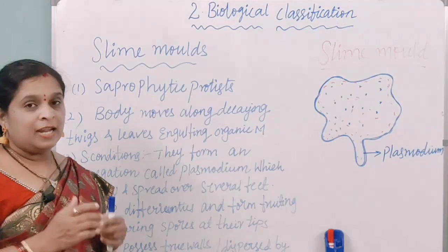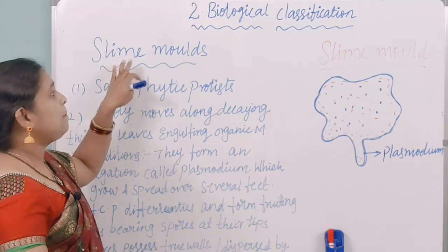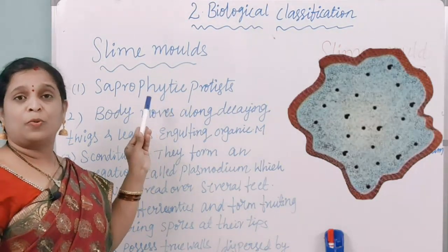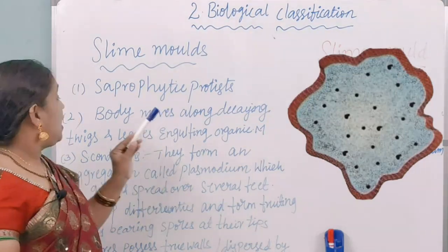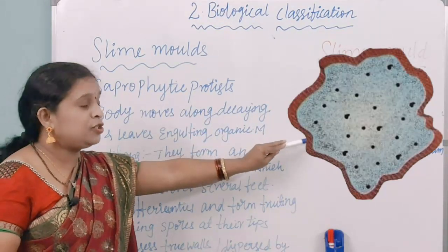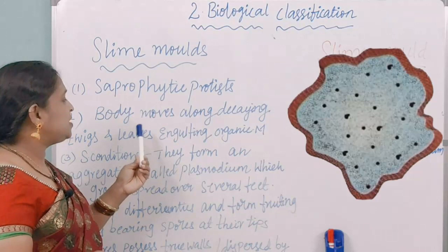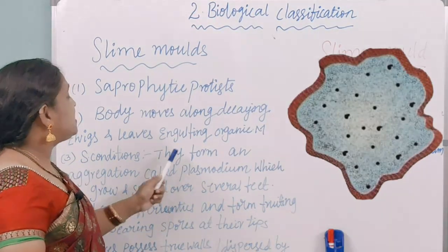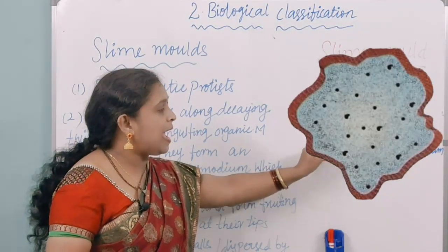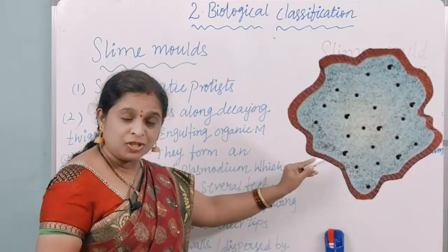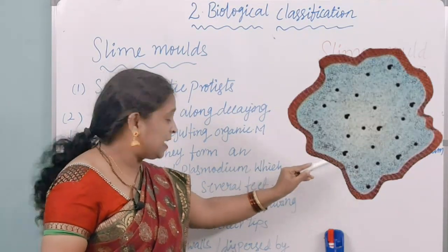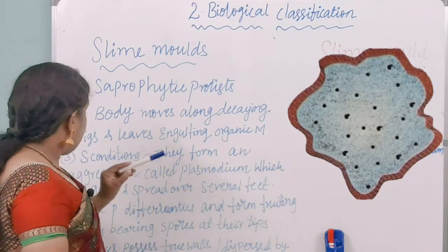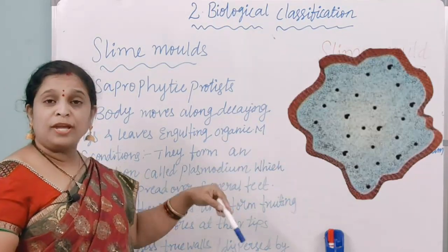The next category is slime moulds, which are called saprophytic protists. Saprophytes are organisms that depend on dead and decaying matter. The body moves along decaying twigs and dried leaves, engulfing organic matter. In suitable conditions, they form an aggregation called plasmodium, which grows and spreads over several feet.